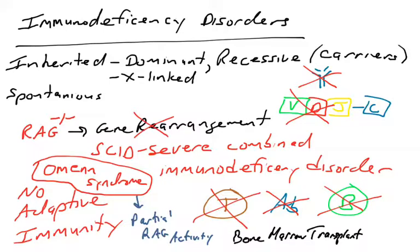SCID due to inherited defects in the RAG genes. There is another syndrome called Omen syndrome, which gives individuals partial RAG activity. So it's not completely absent but it's partial, but it still yields very low recombination. And so they're very low B and T cell numbers and really not enough to help you fight infections.